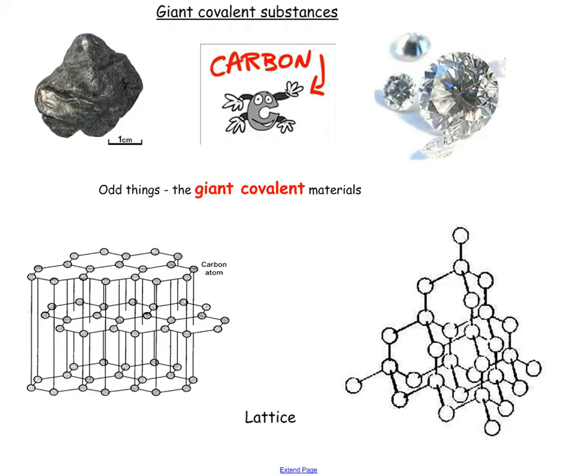Giant covalent substances — it's covalent because it involves atoms sharing electrons with each other, as opposed to ionic bonding where they are swapping electrons. Here, they're just sharing.